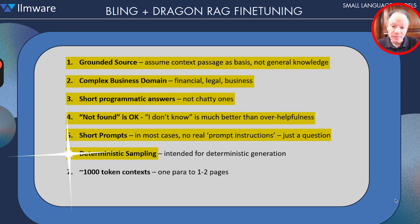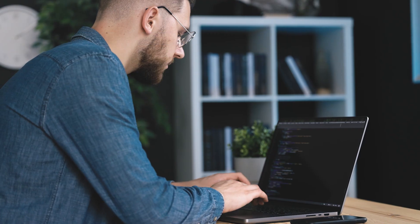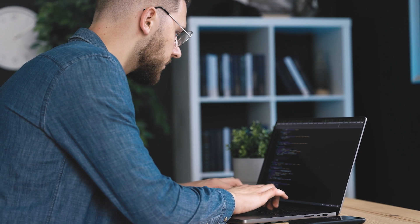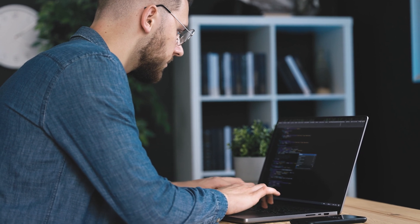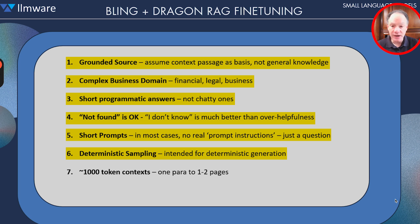These models are intended for deterministic sampling. These are fact-based use cases — we are not looking for creative generation. We're really looking at situations in which temperature is used at zero with sampling turned off. The output from the model at every single token is what we're envisioning the output generation parameters will be, with the idea that this is not for fun or chatbots; it's really intended for fact-based accuracy.